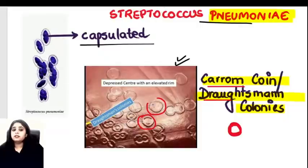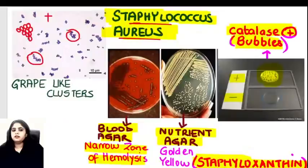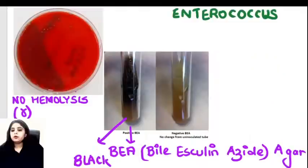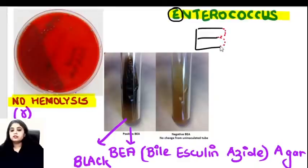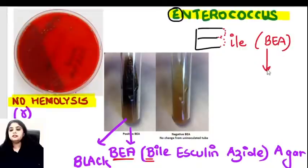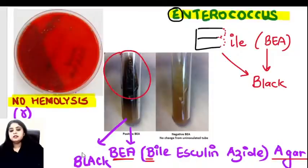Enterococcus causes no hemolysis on blood agar. It is grown on BEA agar (bile esculin agar — bile-related). On BEA, Enterococcus gives a black color. If you see black colonies on BEA, it is Enterococcus positive; no black color means Enterococcus is absent.